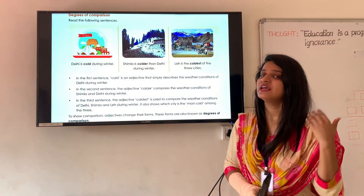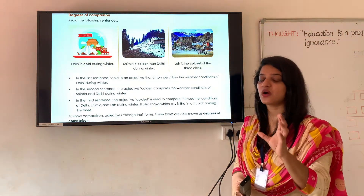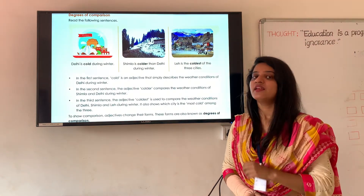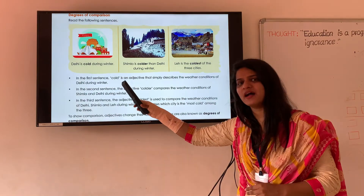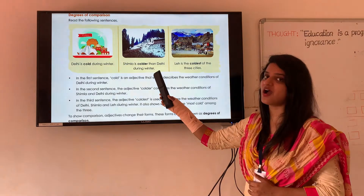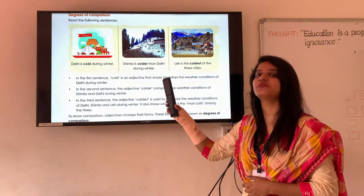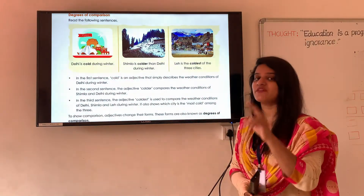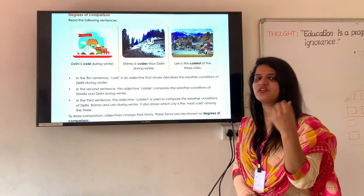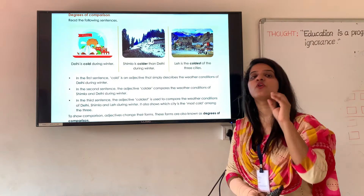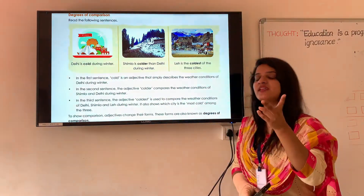First of all, let me explain. Delhi is cold. In the first sentence, the adjective 'cold' is describing the weather of Delhi. Here Delhi is not compared to any other city. But in the second sentence, Delhi is compared to Shimla. As compared to Delhi, Shimla is colder. So Shimla is colder than Delhi during winter. Whenever we compare two things, we use the comparative degree — that is 'colder.' Cold is the positive degree used in the first sentence, just to describe something.